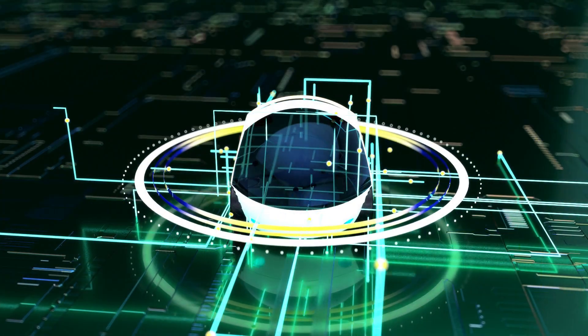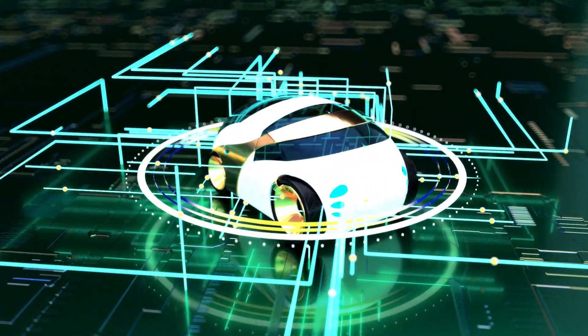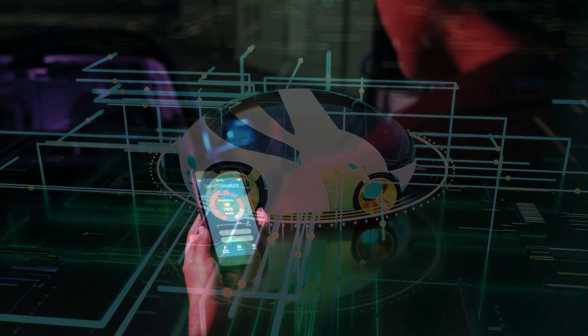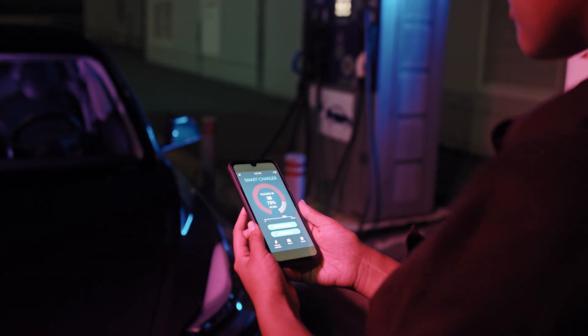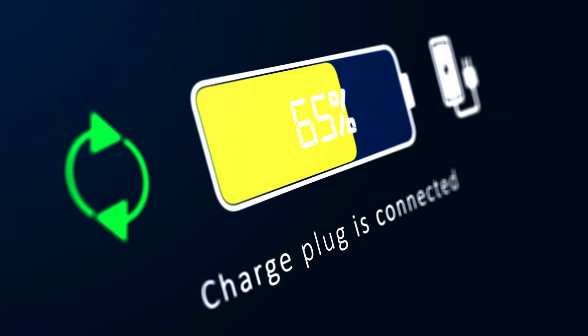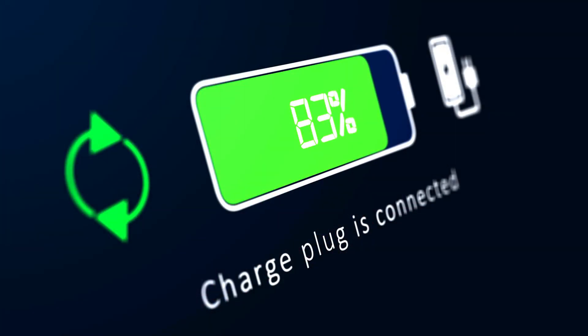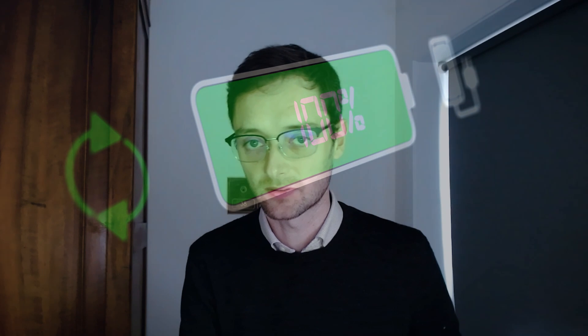And the master BMS is then the connection point to the outside. There the communication with the vehicle happens and all the measurement data or at least the important measurement points are then also sent out into the vehicle for other computers to use this data. That was the BMS.